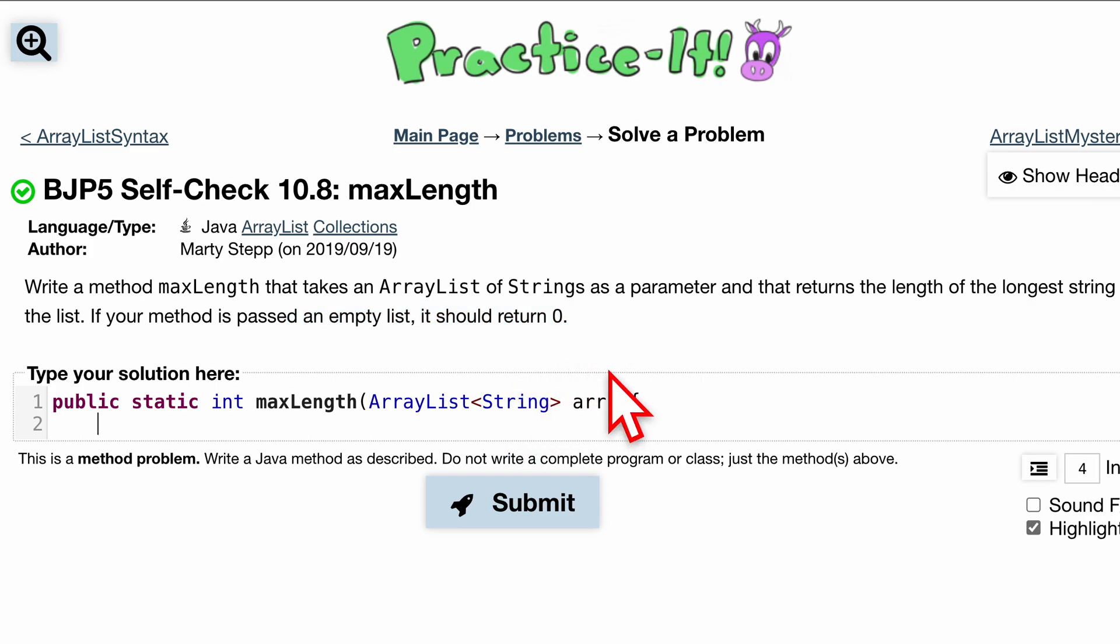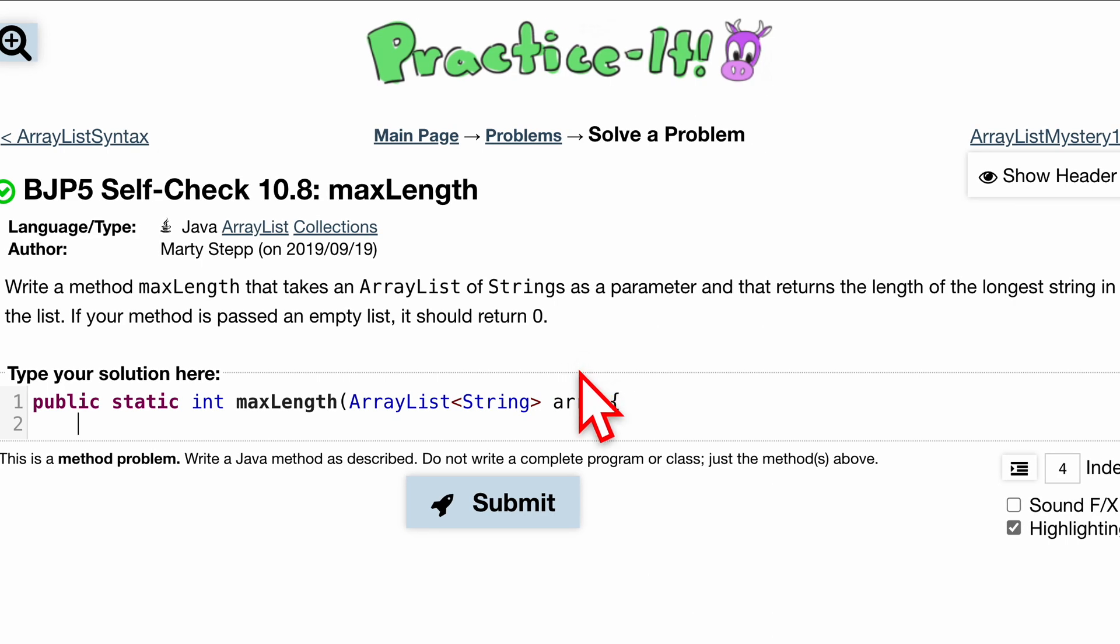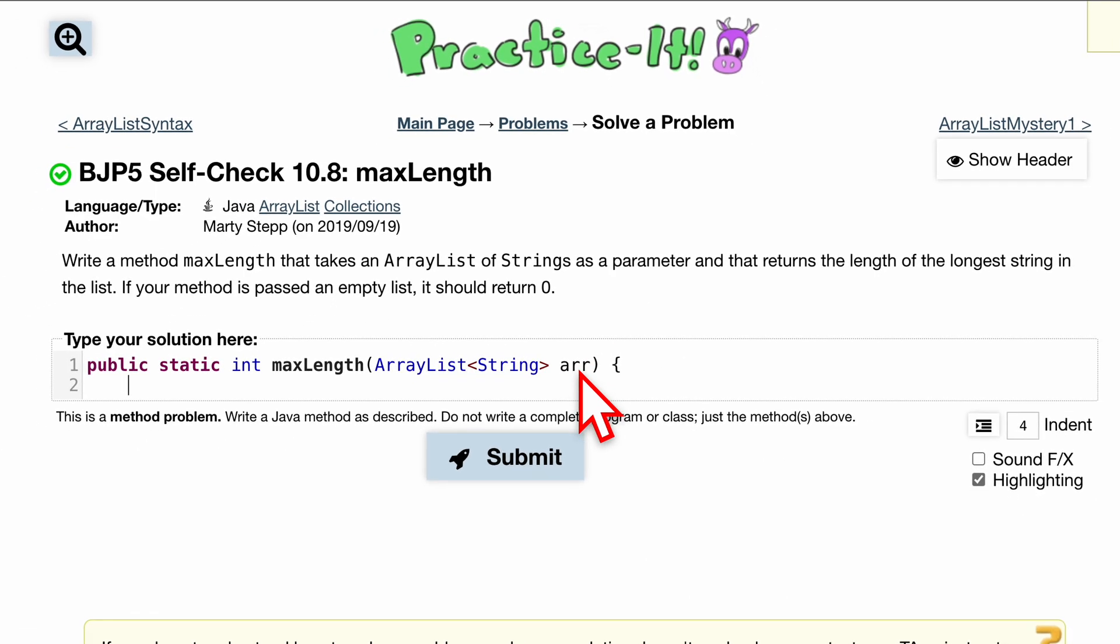Now, we're going to want to run through this entire ArrayList, so we look at every single string inside of it. And since we need to look at every string inside of it, we're going to use a for loop. For int, some arbitrary variable, a is equal to zero, a has to be less than the entire size of our ArrayList. So we'll do arr.size.